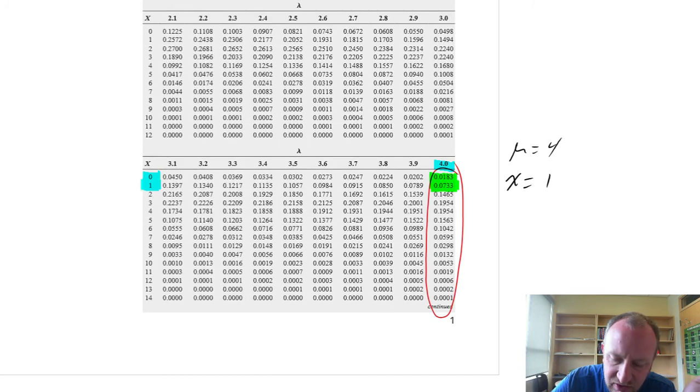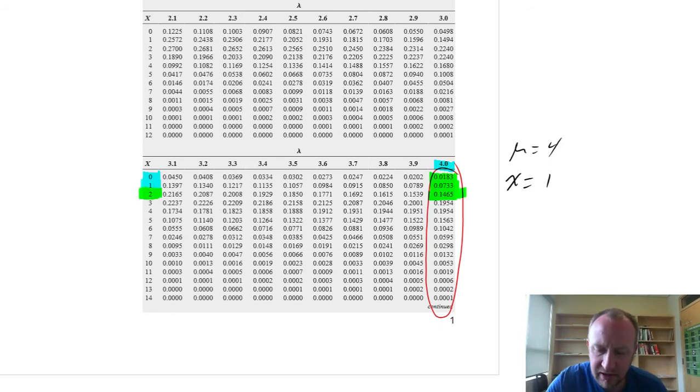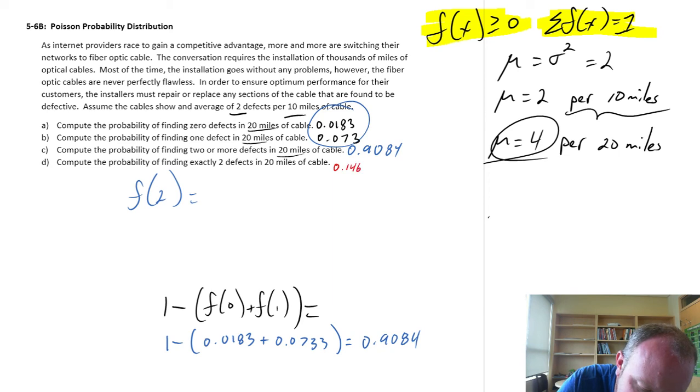I already have, there's our probability, or there's our distribution of relevance with a mean of 4. I want to know what's the probability of 2 defects. So there's 2, and there's our probability, 0.1465. 0.1465 is our answer.